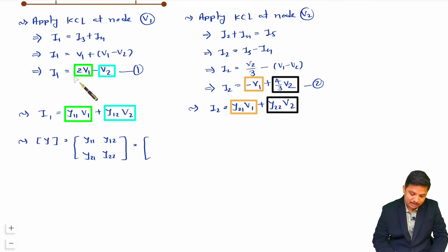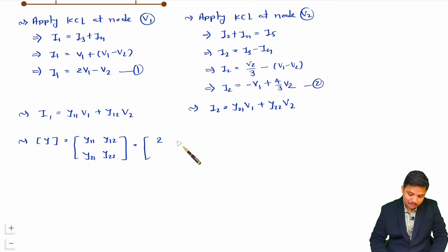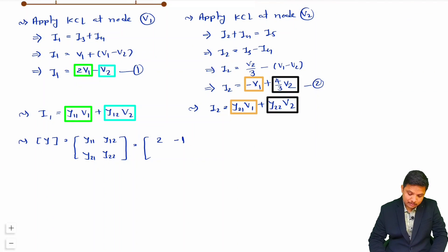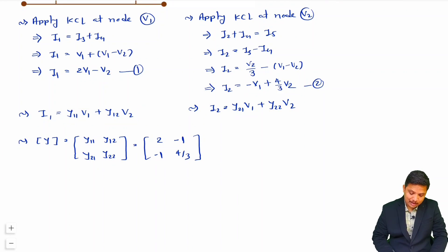Substituting the values: Y11 = 2, Y12 = -1, Y21 = -1, and Y22 = 4/3. So now we have the complete Y matrix.